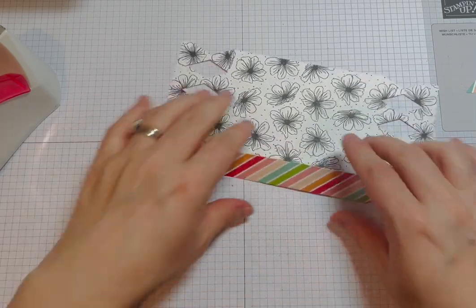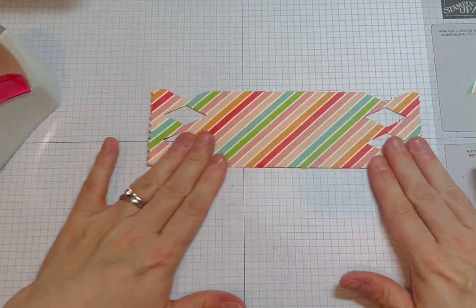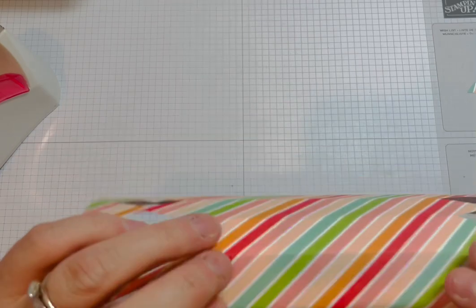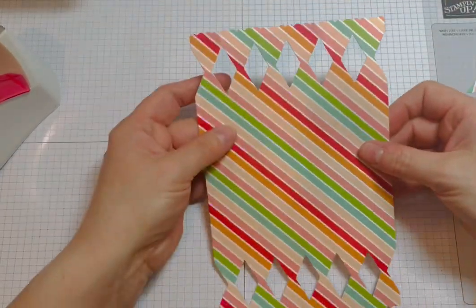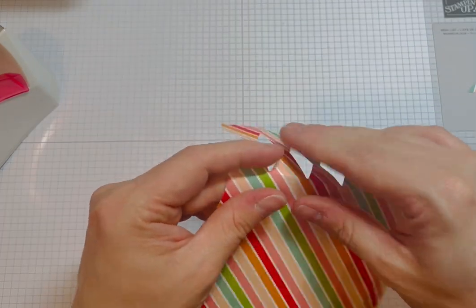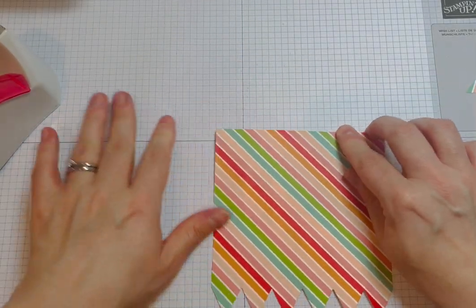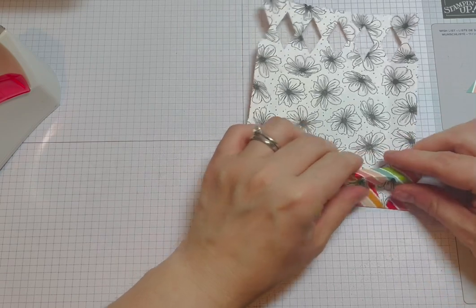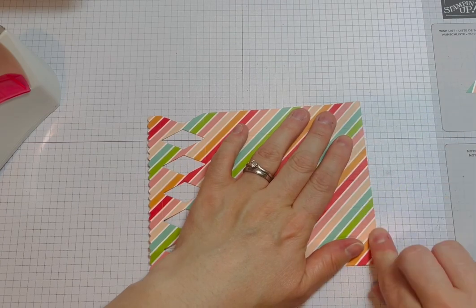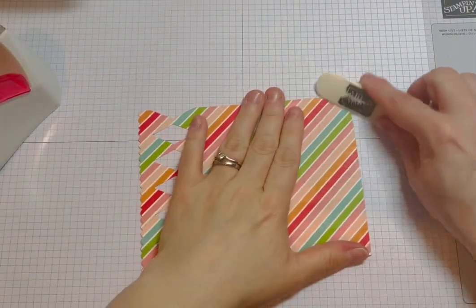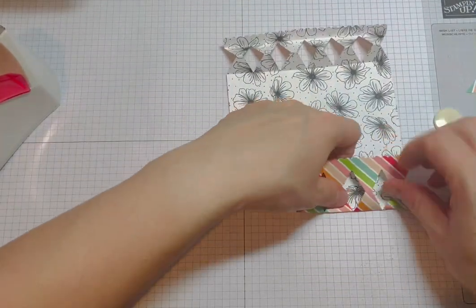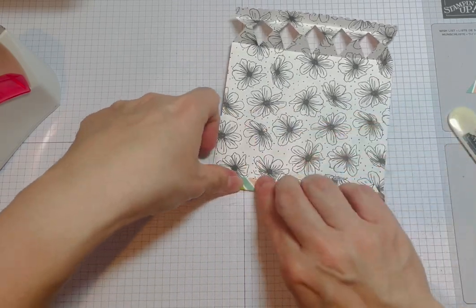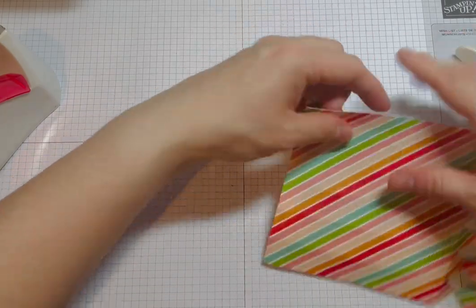You can use a scorer. Now it's often worth at this stage to just get your bone folder and give it a bit of a run over. This side folds this way first, then it folds back on itself, and then it folds this way again. It's worth running your bone folder all over that. You can open it back up.